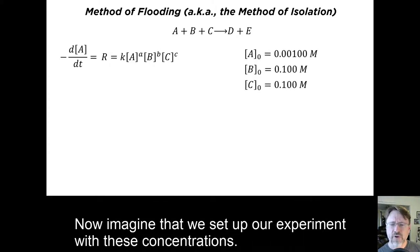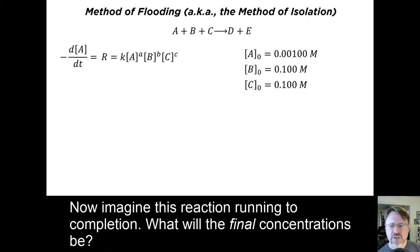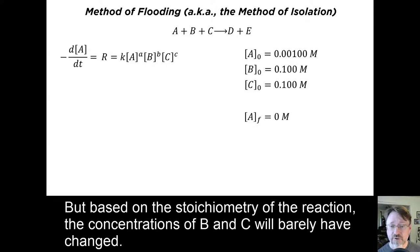Let's further suppose that we are monitoring the reaction by watching the concentration of species A. Now imagine that we set up our experiment with these concentrations. Notice that the initial concentration of A is much smaller than the initial concentrations of either B or C. Now imagine this reaction running to completion. What will the final concentrations be? Well, A is the limiting reagent, so all of that will be used up. But based on the stoichiometry of the reaction, the concentrations of B and C will barely have changed.